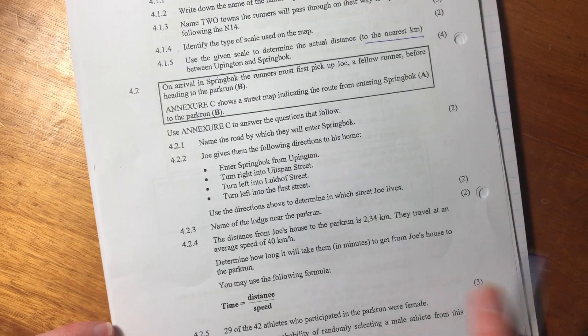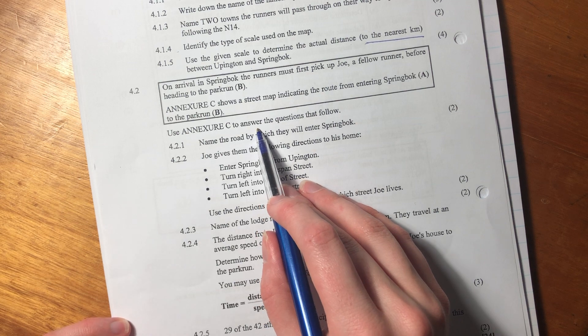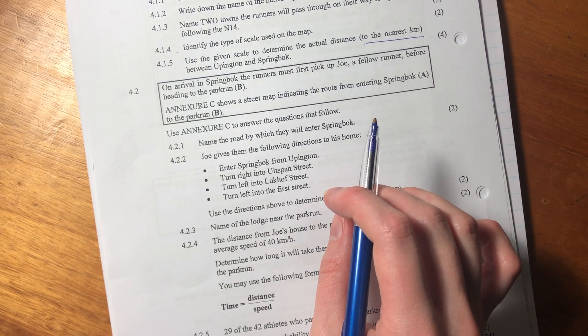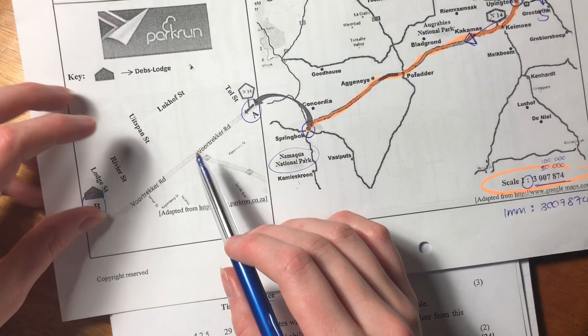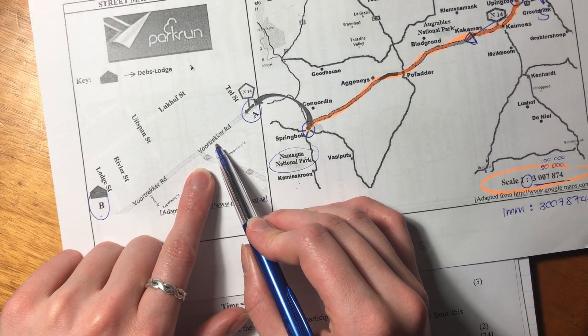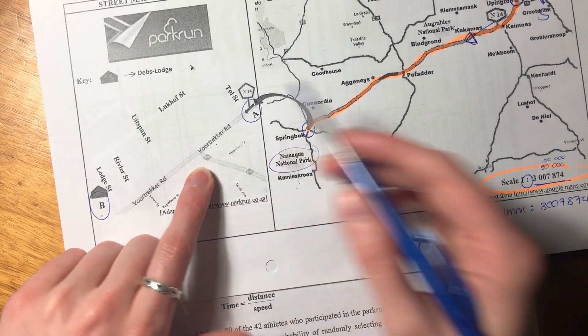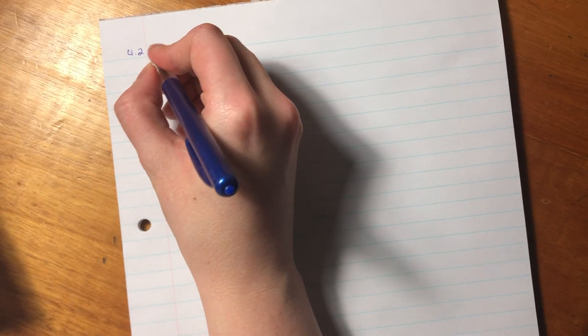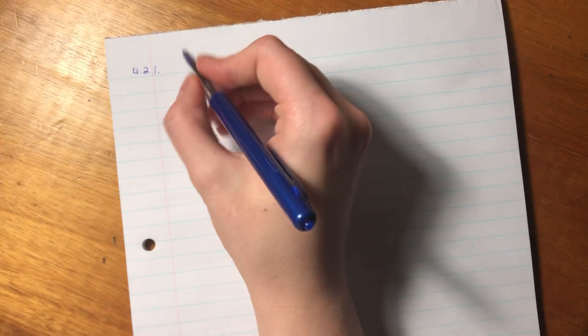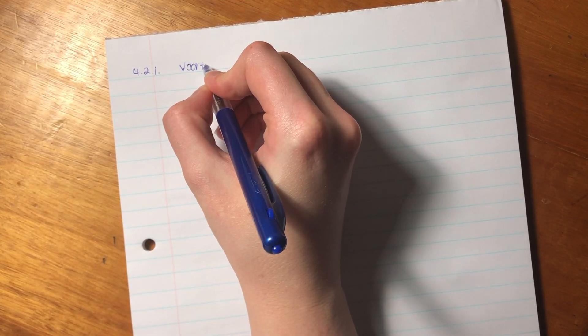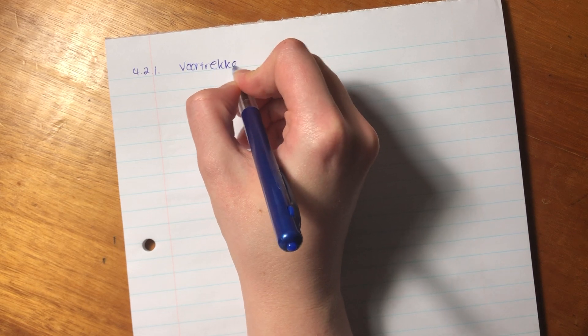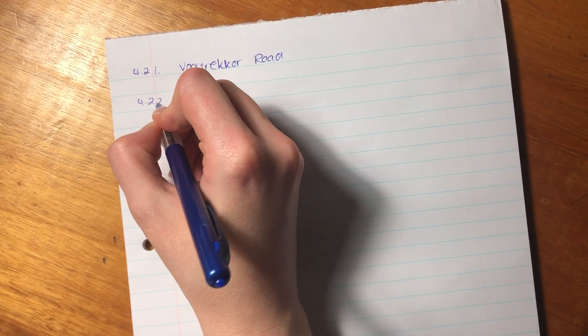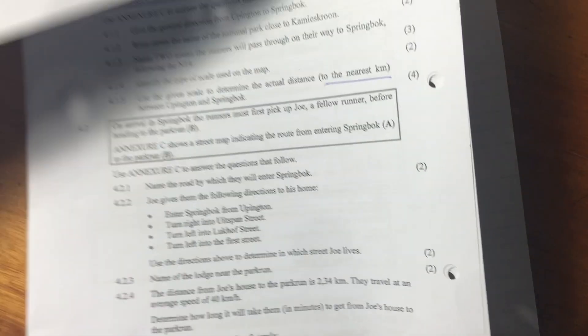So let's just see what they want from us. It says, use annexure C to answer the questions that follow. It says, name the road by which they will enter Springbok. So from what I'm seeing, it'll be Fuertraco Road, because that's the main road that they'll enter on. So let's just write that down. Let me make sure that you can see what I'm seeing. Make sure you spell it correctly. I am honestly a terrible speller. So that was just sort of an introductory question.